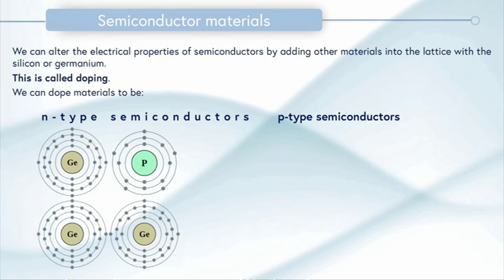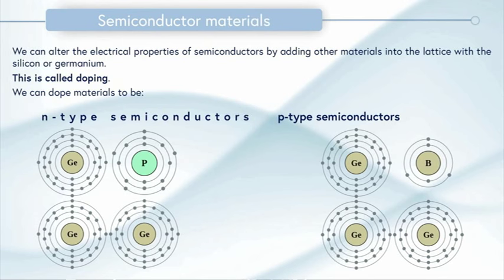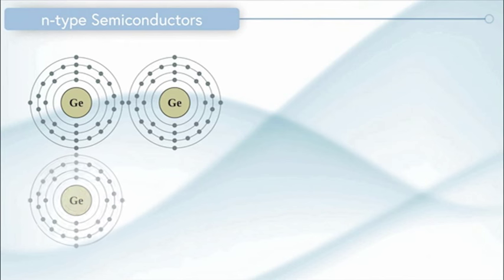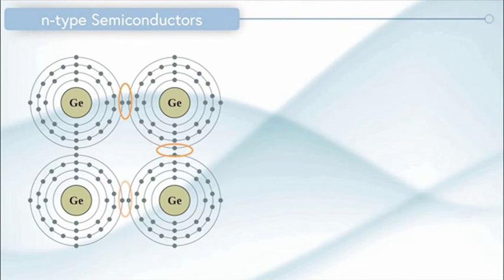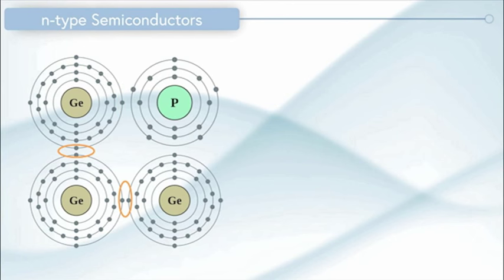We've got our four germanium atoms as before. We're going to remove one of those and replace it with another material. In this example I'm going to use phosphorus. In an n-type semiconductor we take our germanium lattice and remove one and replace it with something else. I've chosen phosphorus. The reason for this is because instead of having four outermost electrons, phosphorus has five.